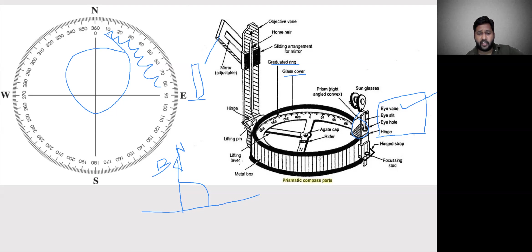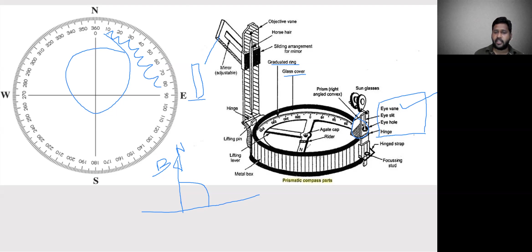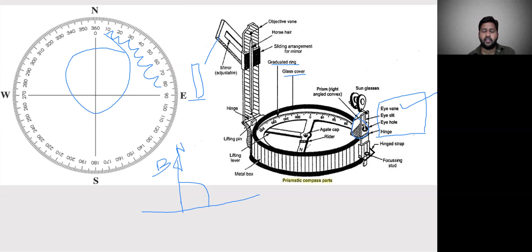There is also a lifting lever, lifting pin, and metal box. When you are doing the survey, there is a chance that the graduated circle gets attached to the metal box, and the prismatic compass may not show an exact value because of that attachment. So there is a lifting pin to lift the graduated circle so it does not attach to the metal box. This is the total arrangement of the prismatic compass.